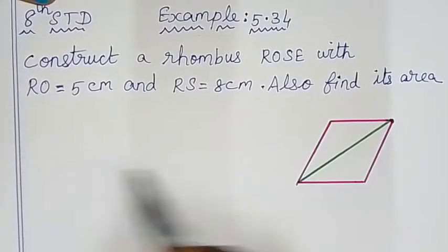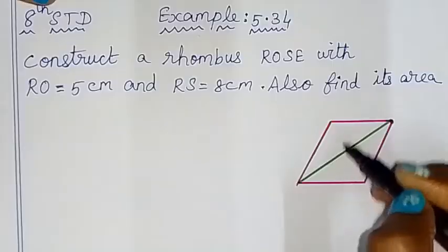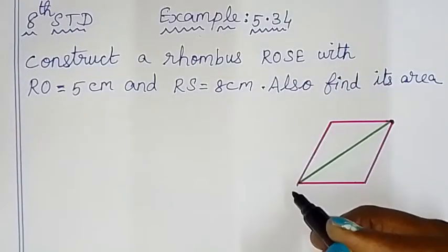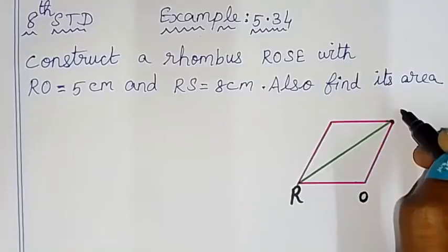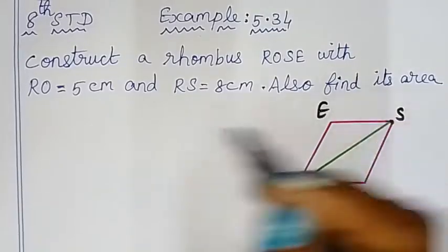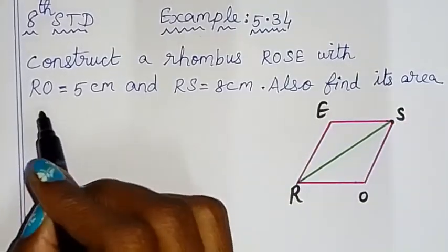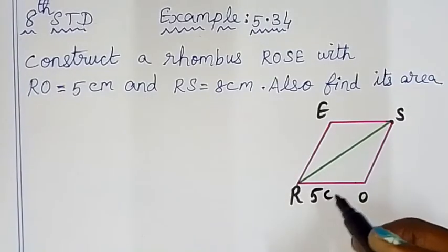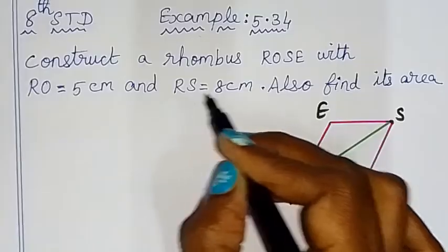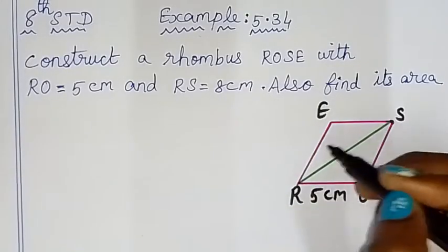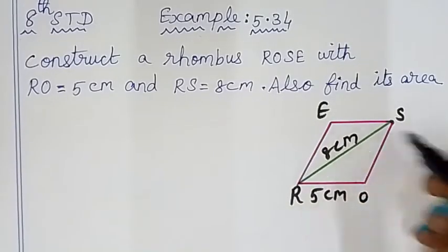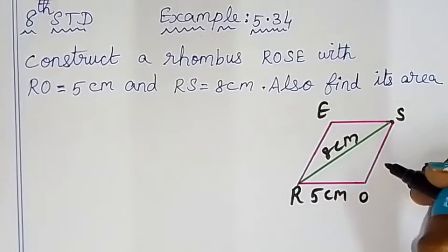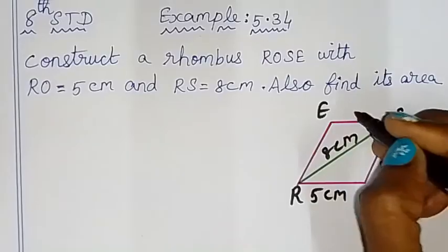Now, how do we have the measurements? First, draw a rough diagram of the rhombus. The measurements are: RO is equal to 5 cm and RS is equal to 8 cm. Since all sides of a rhombus are equal, all sides are 5 cm.